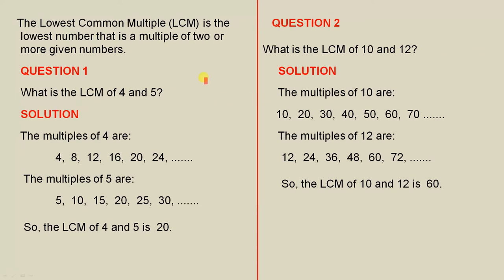Let's look at question 1 as an example. What is the LCM of 4 and 5? LCM is short for lowest common multiple. The solution: the multiples of 4 are those numbers — that's just the beginning of the 4 times table, finishing at 4 times 6, which is 24.